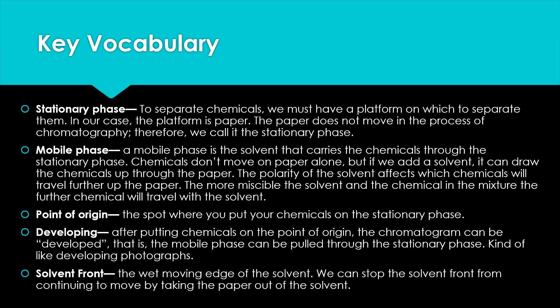The more miscible — or more alike — the solvent and the chemical in the mixture are, the further the chemical will travel with the solvent. If you've got a polar solvent, more polar chemicals travel further. If you've got a nonpolar solvent, nonpolar chemicals travel further. The point of origin is the spot where you placed your chemicals on the stationary phase — where the pencil line is. Developing refers to the process of the mobile phase being pulled through the stationary phase, similar to developing film in a camera.